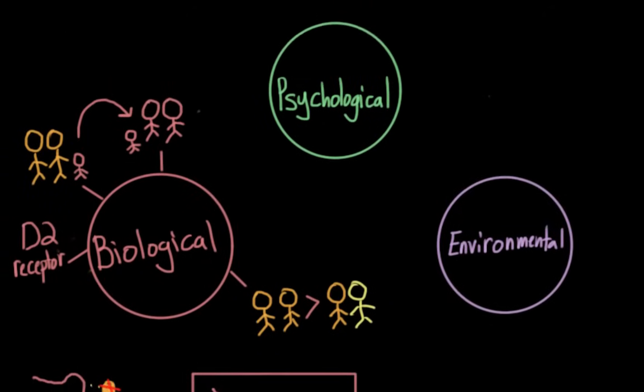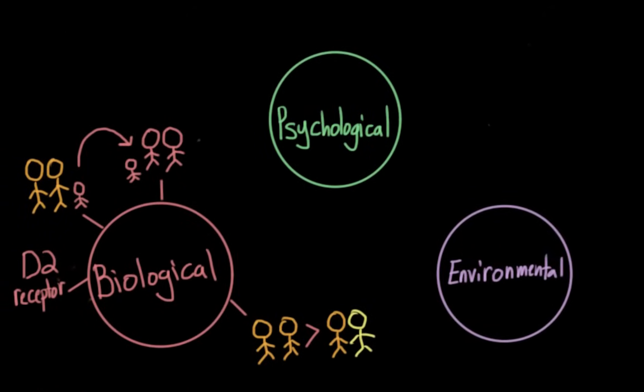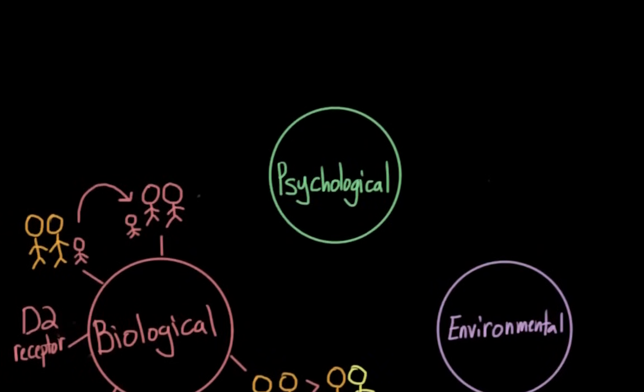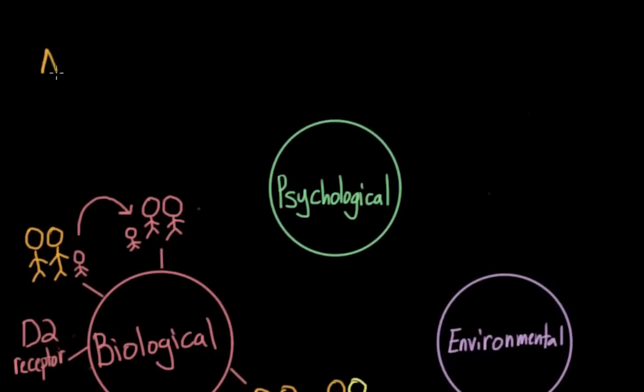Another biological risk factor for addiction has to do with comorbidity, meaning that individuals with certain psychiatric disorders might be more likely to have substance abuse problems as well. One of these disorders is Attention Deficit Hyperactivity Disorder, ADHD. And this actually makes a lot of sense to me, because individuals with ADHD tend to be impulsive. And as we will talk about later when we talk about psychological risk factors, impulsivity in general seems to be a risk factor for addiction.